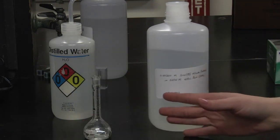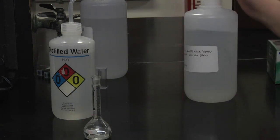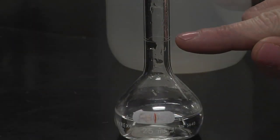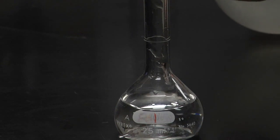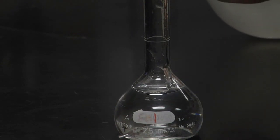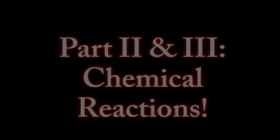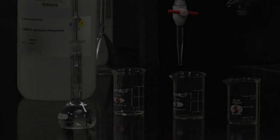We're going to fill the volumetric flask with distilled water to its calibration mark. Always remember to read from the bottom of the meniscus. Now we have our dilute iron solution.